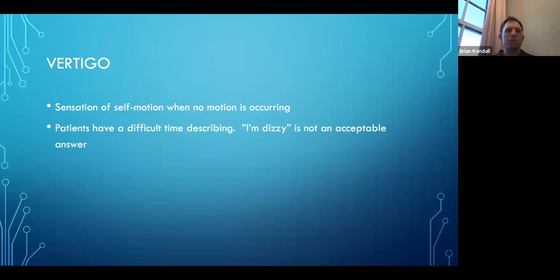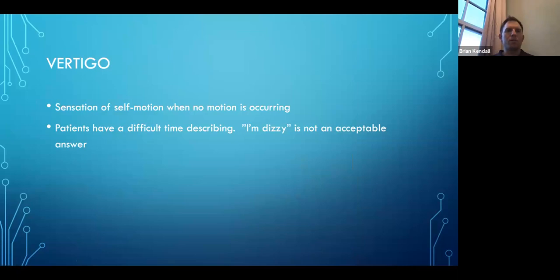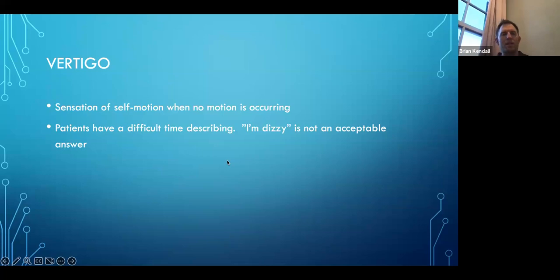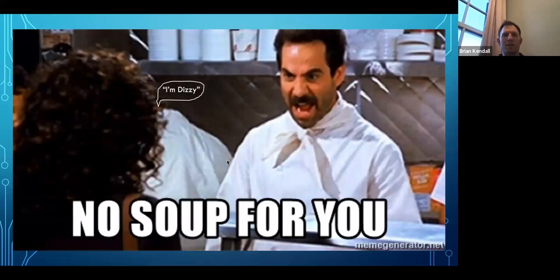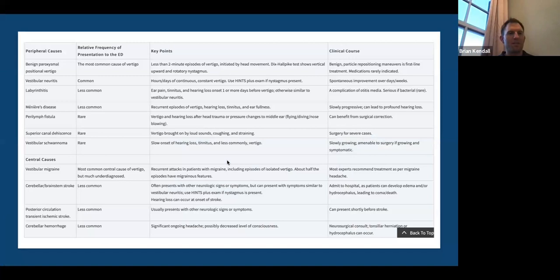Starting off with a quick definition of vertigo: sensation of self-motion when no motion is occurring. Patients have a difficult time describing it, but 'I'm dizzy' is never an acceptable answer. Anytime a patient says 'I'm dizzy,' no longer do you accept that. You need to make them define what they mean by dizzy. No soup for you — I'm dating myself with the Seinfeld references there.